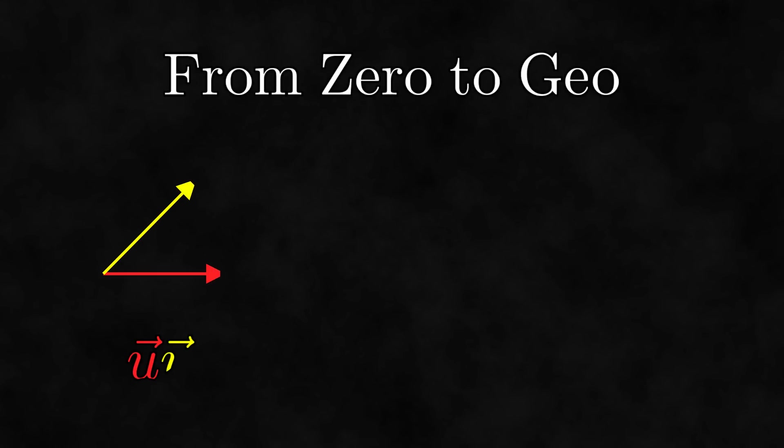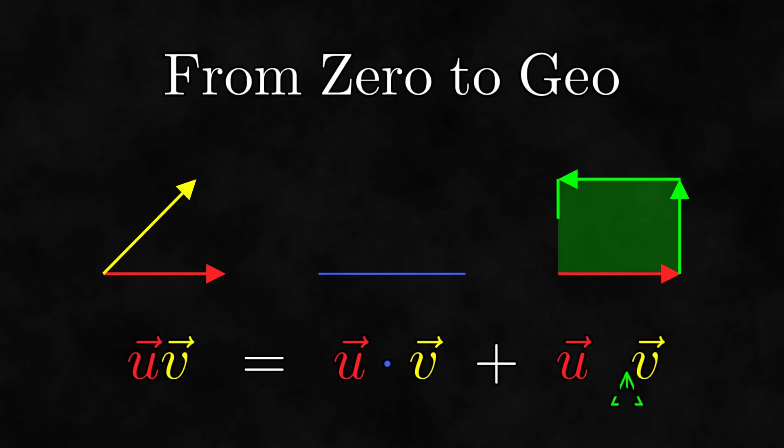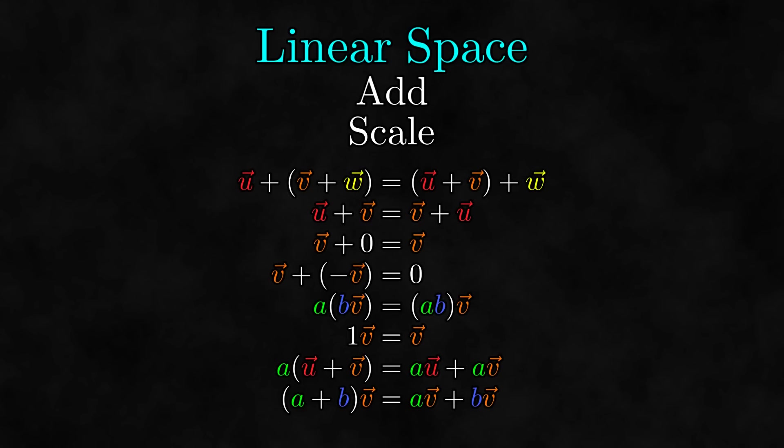This video is part of From Zero to Geo, a series where we formulate geometric algebra, an incredibly powerful branch of mathematics, from the ground up. To determine if bivectors form a linear space, we need to recall what a linear space is. A linear space is a set where we can add and scale elements, with addition and scaling satisfying these conditions. We know how to add and scale bivectors, so are these statements true for bivectors?